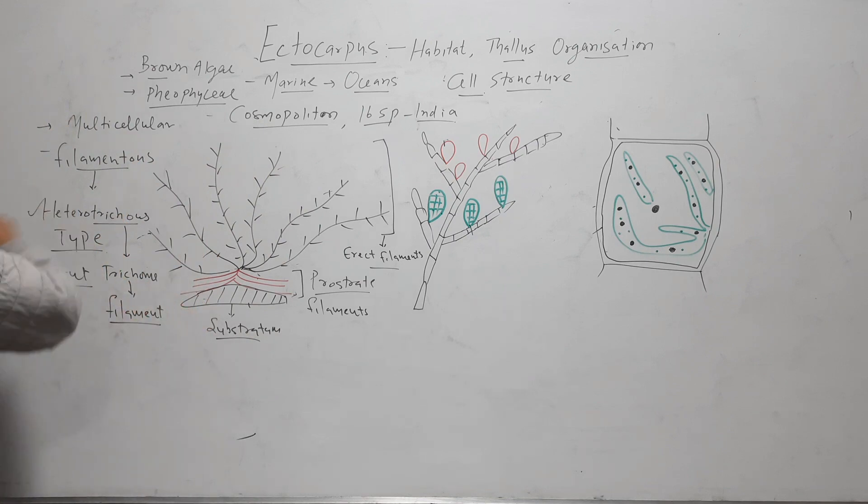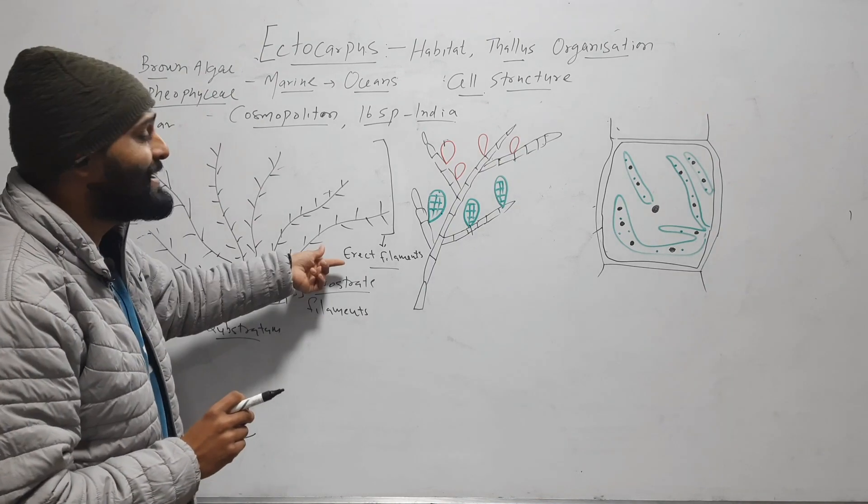So thallus is heterotrichous. Means it has two types of filament, prostrate filament and erect filament.